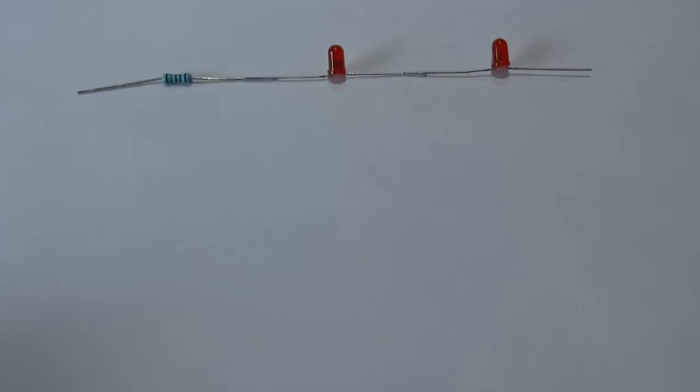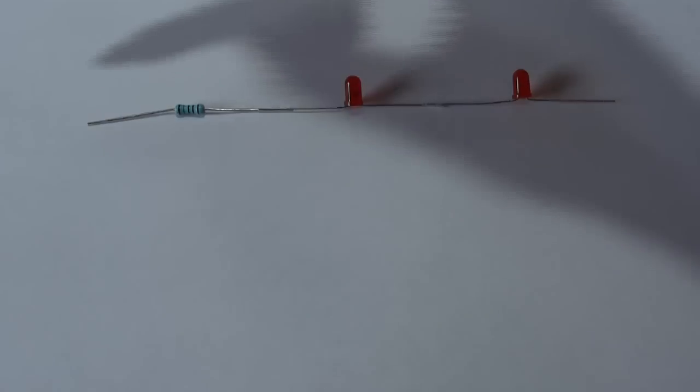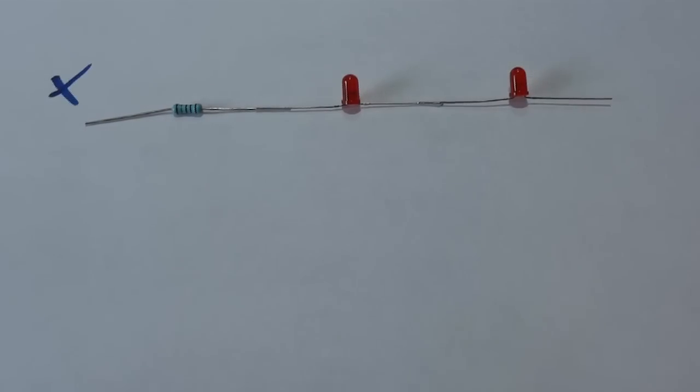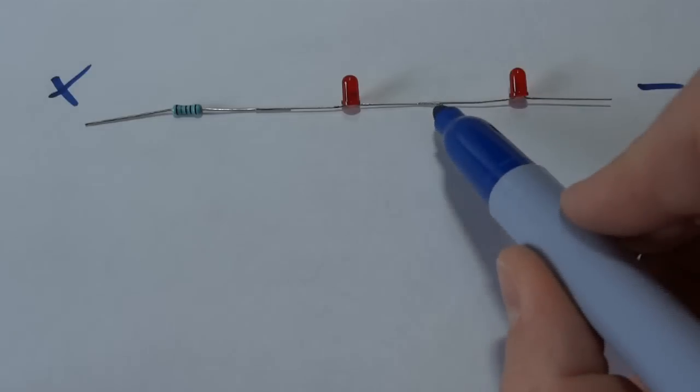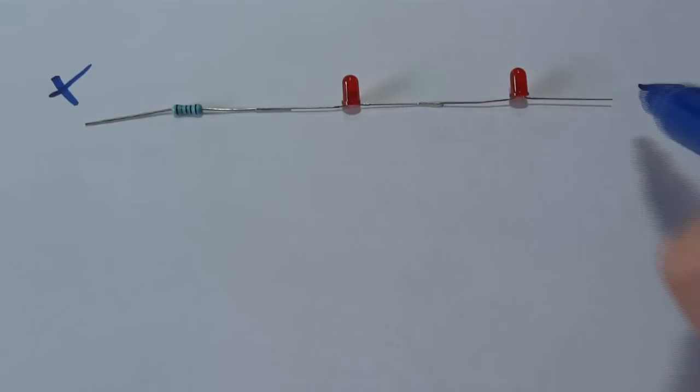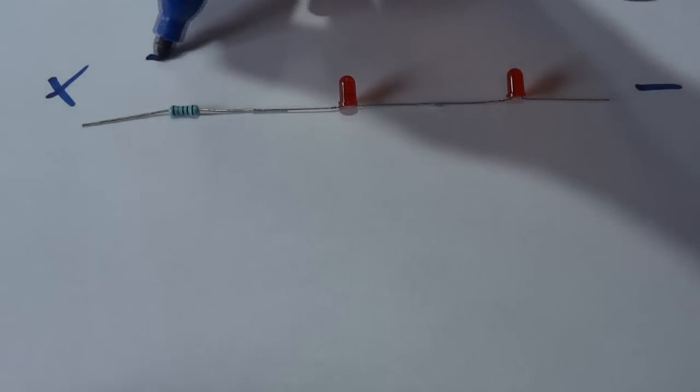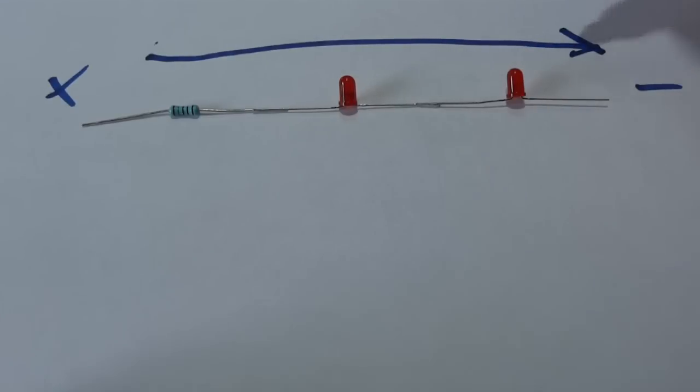So in the next example I've got two LEDs. These are wired in series, much like the batteries. Basically the resistor I've put at the positive end, and the other end of course is negative or zero volts. Both of the legs point towards the positive end, which are the anodes, and both the cathodes point the other end, and that's because electricity is going to flow from positive to negative in this direction. So both of them are pointing in the same direction.